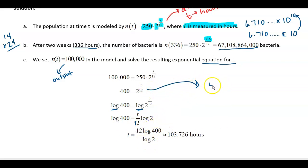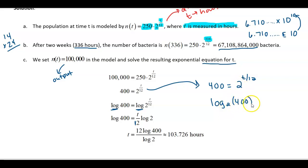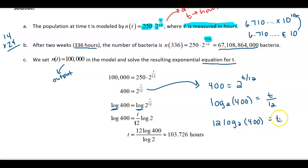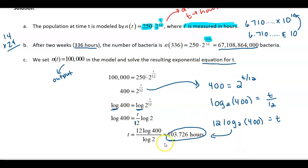Another strategy is to change from exponential form to logarithm form. You would write: logarithm base 2 of 400 equals t over 12. Remember to use that same base — base 2. Then to finish solving for t, multiply both sides by 12: t equals 12 times logarithm base 2 of 400. This gives you the same answer and is just a different approach — whichever one makes sense to you is fine.